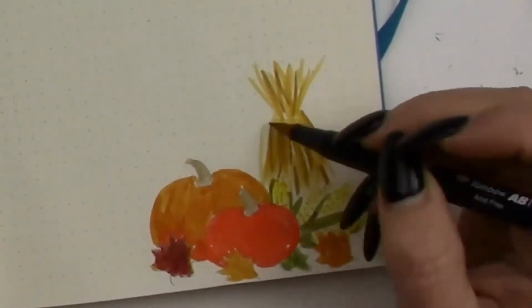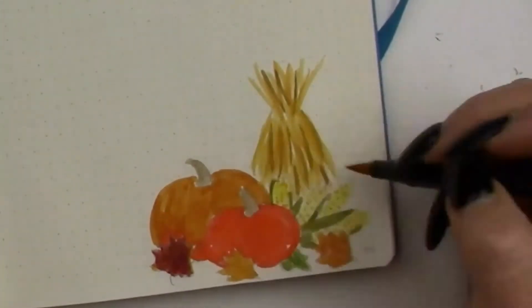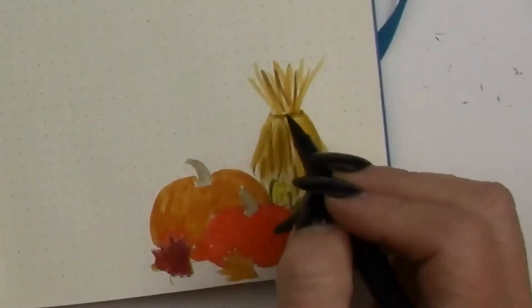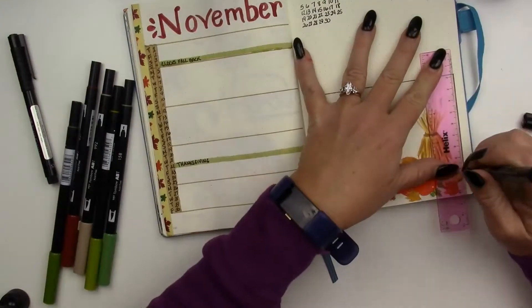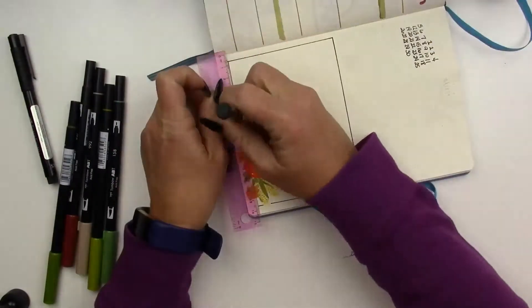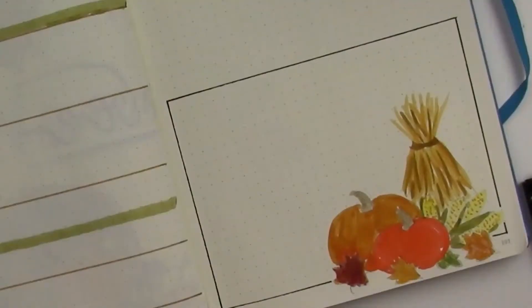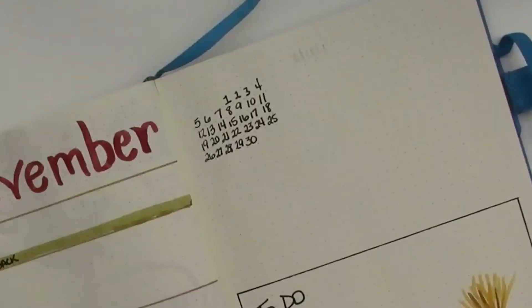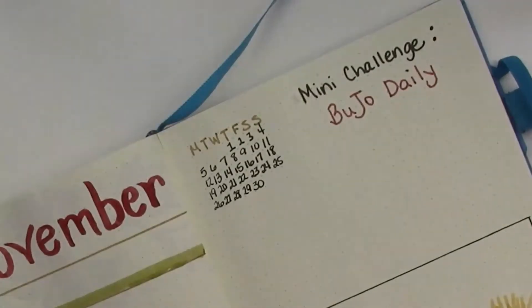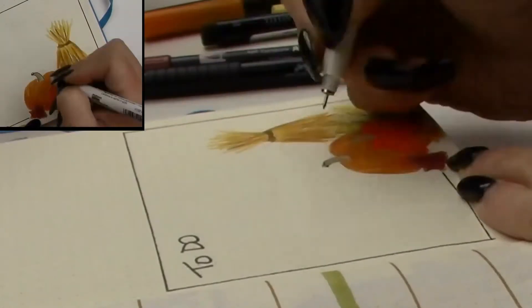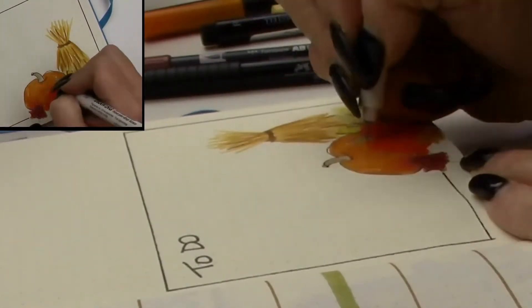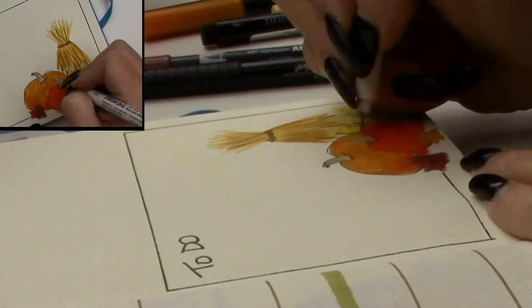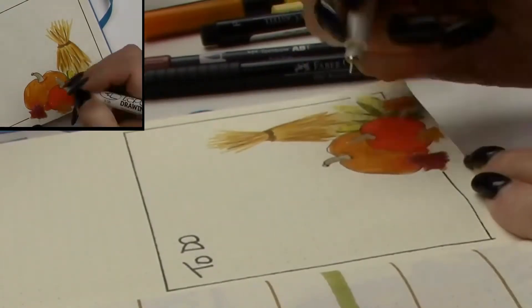Now it's four different shades of like a yellow and brown to do the hay bundle.